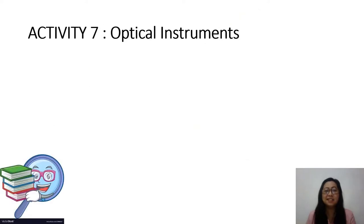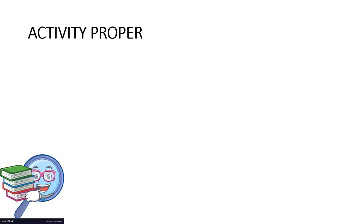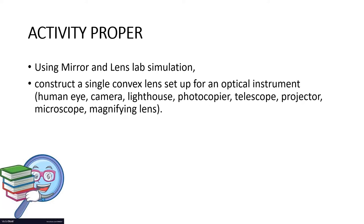To fully understand the principles behind optical instruments, let's do Activity 7. For this week, our competency is to identify ways in which the properties of mirrors and lenses determine their use in optical instruments. Using the mirror and lens lab simulation, you are going to construct a single convex lens setup for an optical instrument that will be assigned to your group.